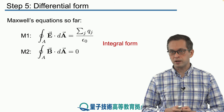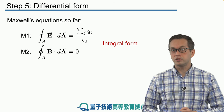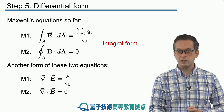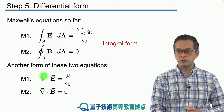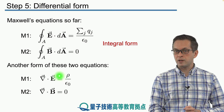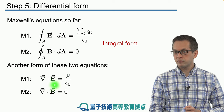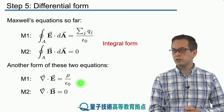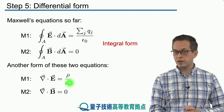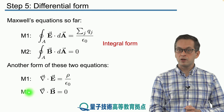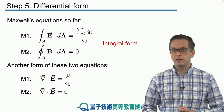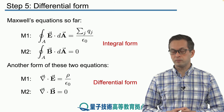There's another form for Maxwell's equations called the differential form. It's given by a dot product expression: for the electric field, this dot product equals the electric charge density divided by epsilon naught, whereas for the magnetic field, this dot product equals zero. This is known as the differential form.